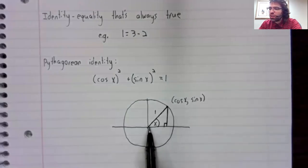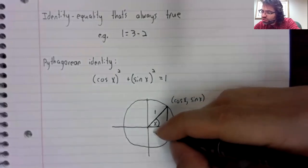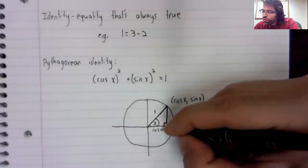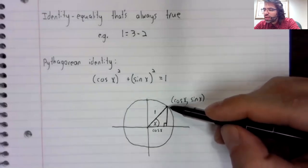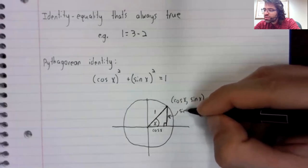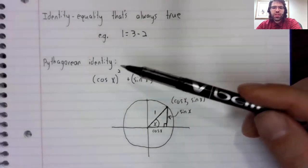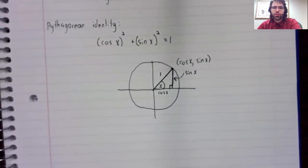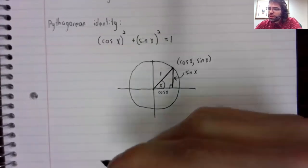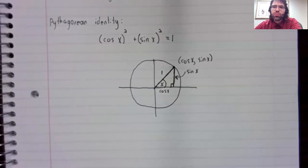So if we drop down a line segment like that and create the right triangle like so, this horizontal distance is the same as this horizontal distance. It's the cosine of x, and this vertical distance is the sine of x, and the Pythagorean identity then comes immediately from the Pythagorean theorem.